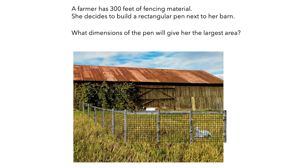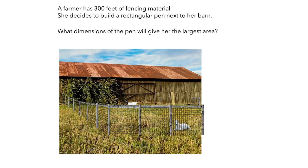In this video, you will see Julian and Alyssa working on a problem where a farmer has 300 feet of fencing and wants to build a rectangular pen next to her barn. She wants to figure out the dimensions of the pen that will give her the largest area. As they work, consider the obstacles they encounter and think about how you might solve the problem.